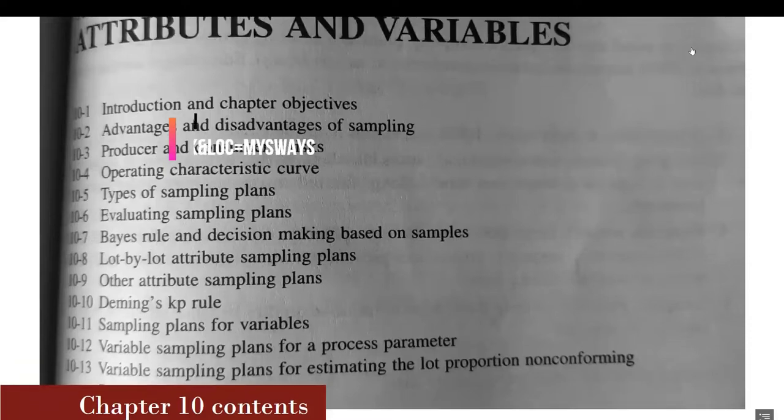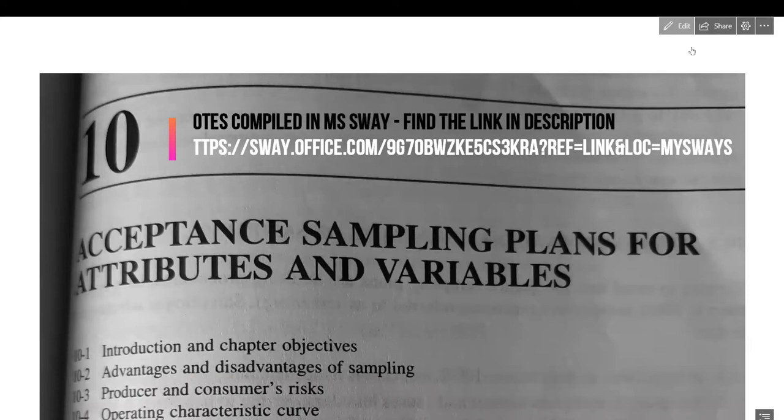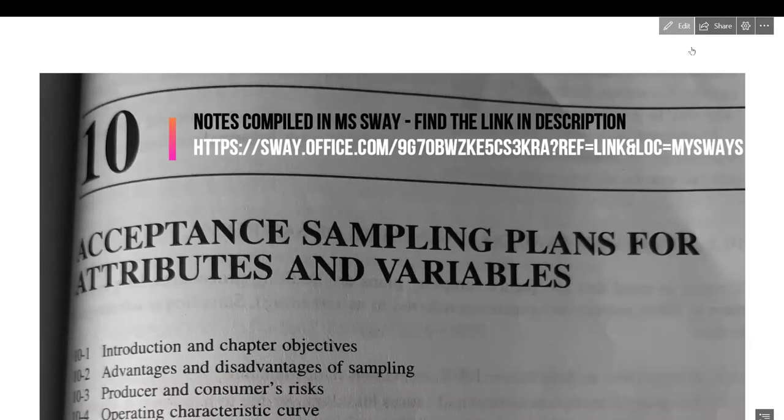Chapter 10 covers acceptance sampling, where statistics revolve around attribute and variable data types. For attribute data, which you can count and classify, you can use ANSI Z1.4. For variable data, you can use ANSI Z1.9. These two standards are commonly used, and the approach is similar. You have to work with the OC chart, which we'll discuss.